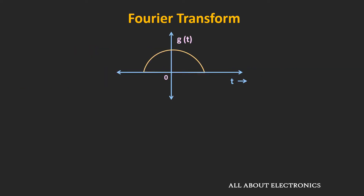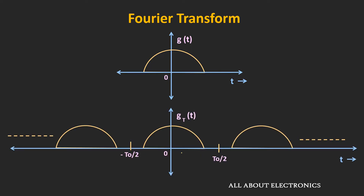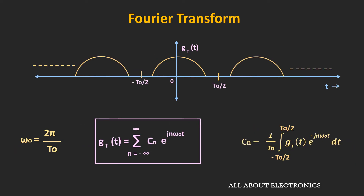For that, let's define a new periodic signal from this aperiodic signal. As you can see, this new signal g(t) repeats itself after one time period. Since this signal g(t) is periodic, we can represent it as the summation of complex exponentials, and the contribution of each complex exponential can be found using the corresponding expression.